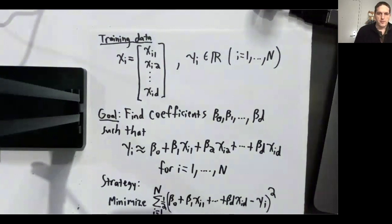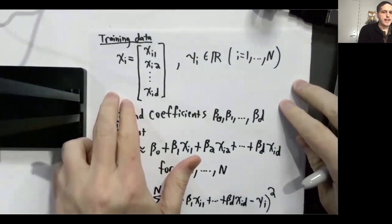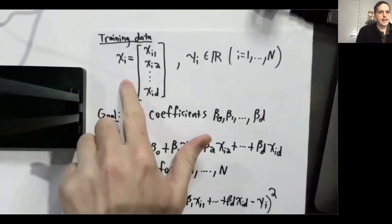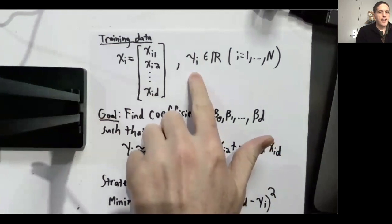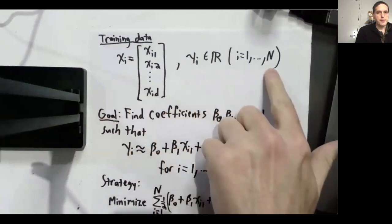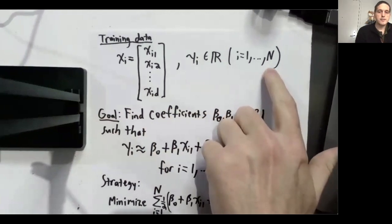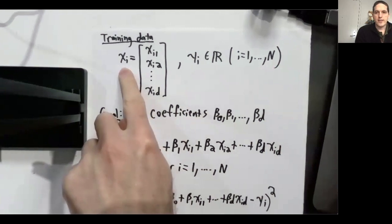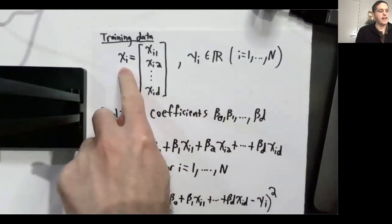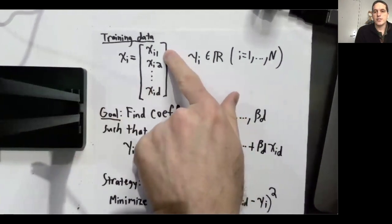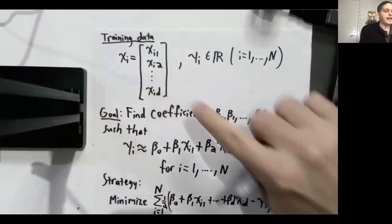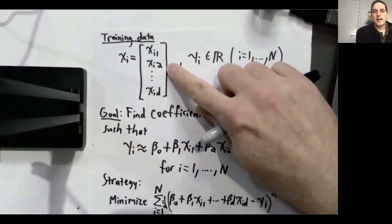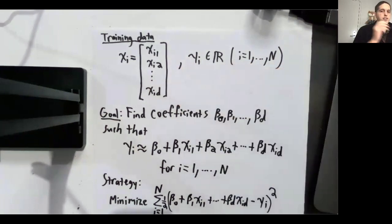Suppose that we're doing a regression problem, such as predicting the selling price of a house, and we're given a training data set that consists of a list of feature vectors xi and corresponding target values yi, and the number of training examples is capital N. Maybe our training data set contains data about 10,000 different houses, and xi is a feature vector that describes the ith house. Maybe xi1 tells you the square footage of the house, and xi2 might tell you the number of bedrooms, and so on. Each feature gives you a piece of information that will help you predict the selling price.